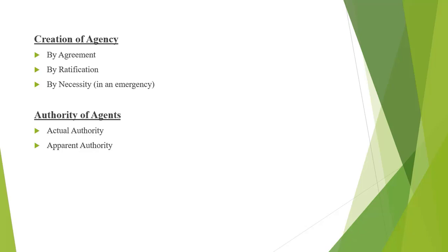The third type is the agent's authority in an emergency. This is authority which is not given by the principal to the agent; rather, it is authority which is given by the law directly to the agent in case of an emergent situation, so that the agent can exercise that authority for the benefit of the principal.